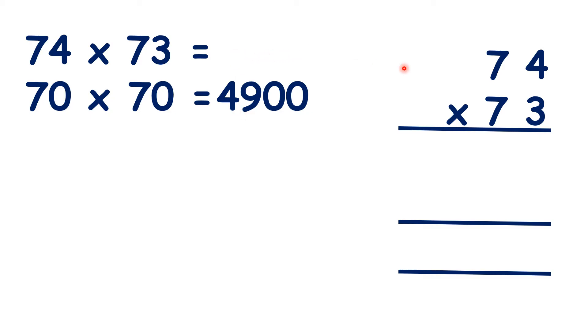So, now, let's work out our answer. 4 times 3 is 12. 7 times 3 is 21. Plus 1 is 22.